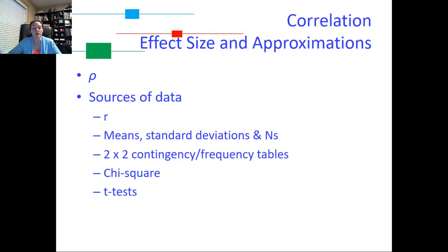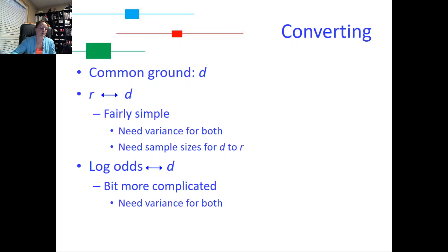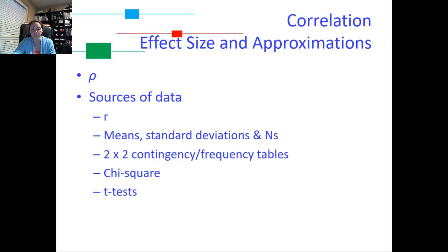And then we can also look at t-tests. So these are going to give you the same thing that means, standard deviations, and Ns give us, and we can convert the t-test data into a rho as well. So in general, there just aren't as many possibilities of data that you can get in order to compute a correlation than there are for a standardized mean difference. As we saw in the last lecture, there's about 30 different ways that you can compute a standardized mean difference. So with correlations, there's just less possibilities of how you can calculate this.